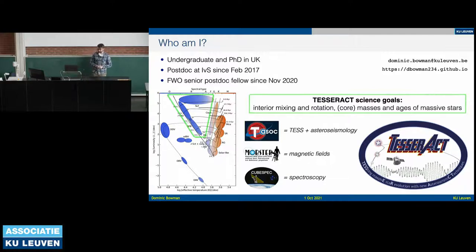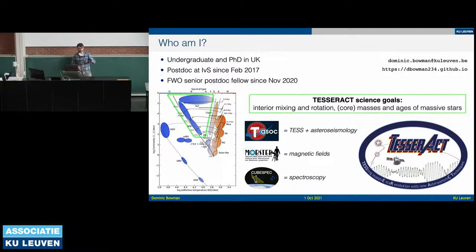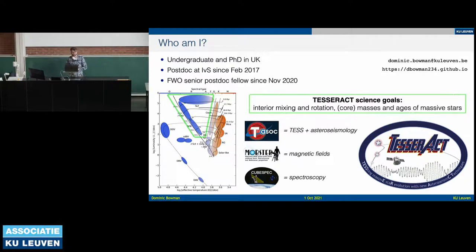The HR diagram on the left is an asteroseismic HR diagram. The green box delimits the parameter space I work in, covering anything from about two to three solar masses upward. I did my PhD on A-type stars and am slowly moving up the main sequence, but I've also looked at blue supergiants and occasionally Auriga Lyrae stars and subdwarfs. The green box denotes the parameter space I'll be talking about today.